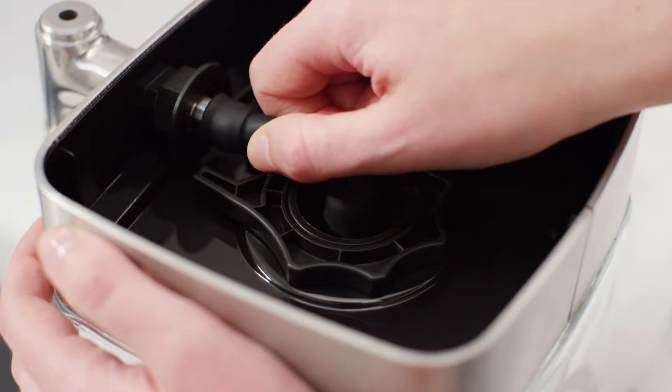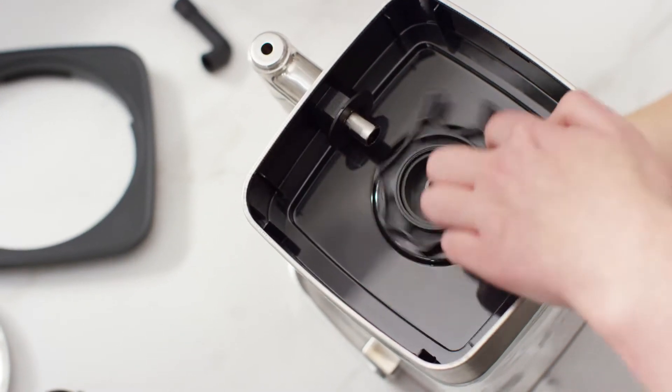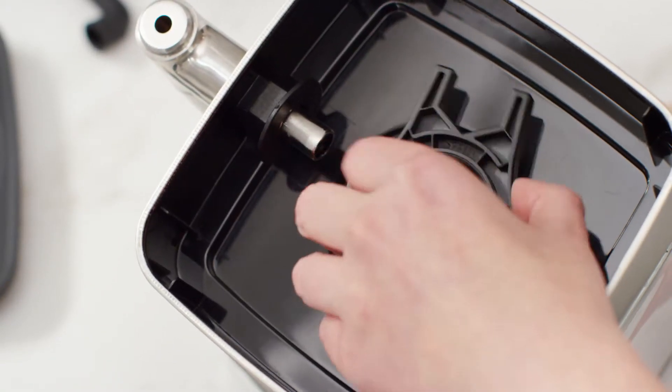Gently loosen the hose nozzle from both ends and remove from the base. Twist and remove the wrench and remove the coffee drain.